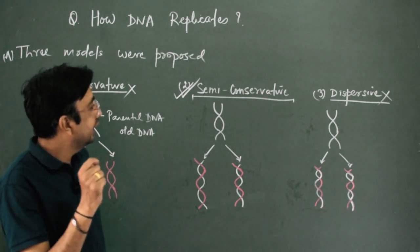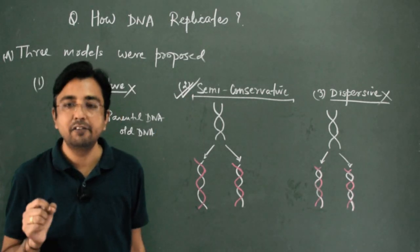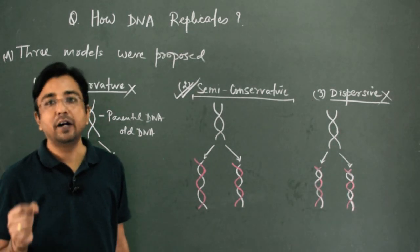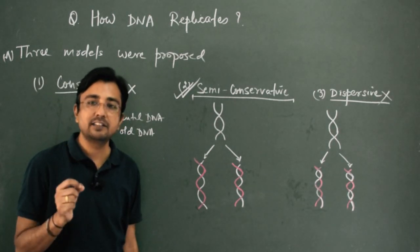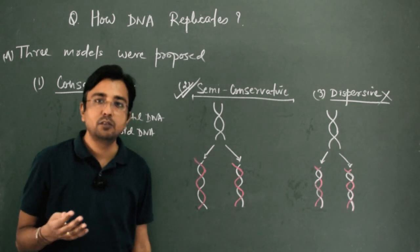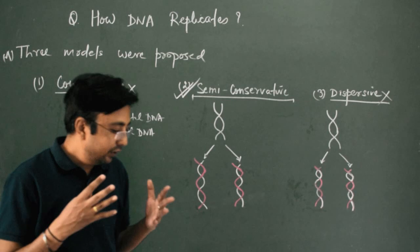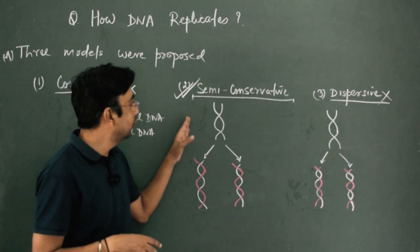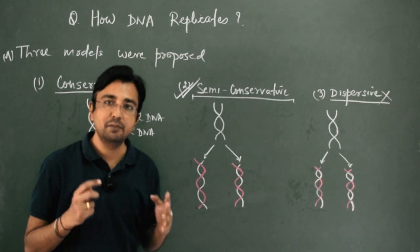DNA replicates semi-conservatively. This was experimentally proved by two young scientists, Meselson and Stahl. In the next section, we will see the experiment done by these two young scientists to prove that DNA replicates semi-conservatively.